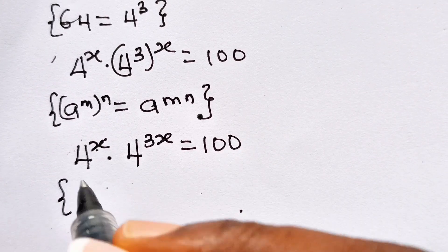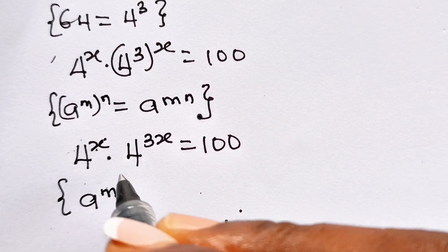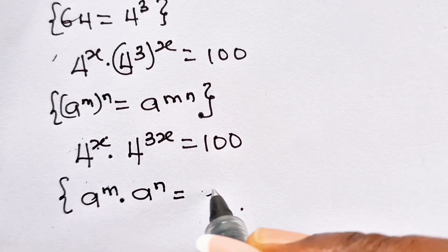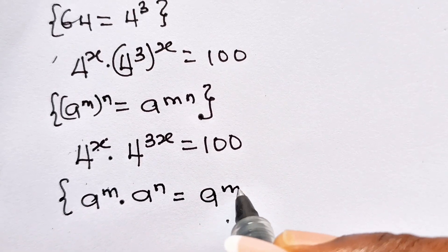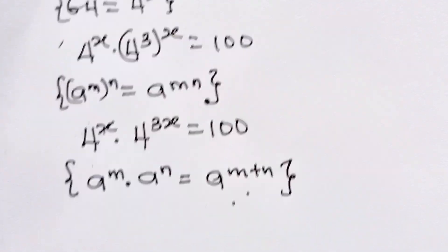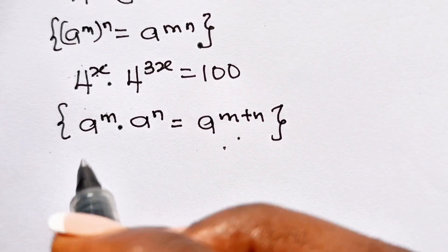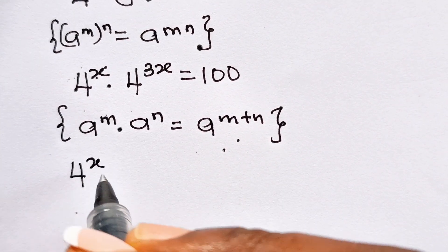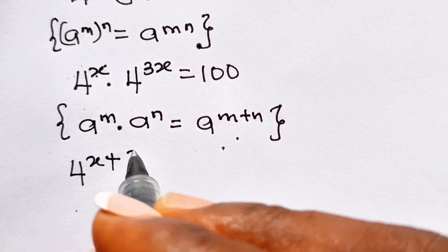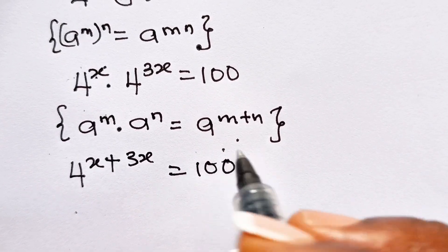Also, recall that a to the power of m multiplied by a to the power of n is equal to a to the power of m plus n. Therefore, we can rewrite this as 4 to the power of x plus 3x, equal to 100.